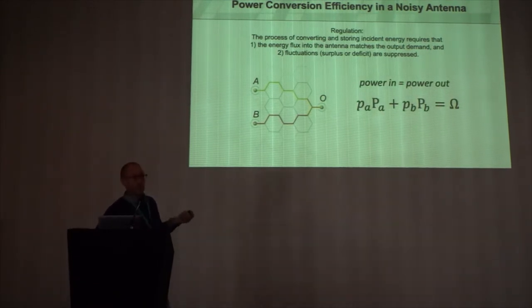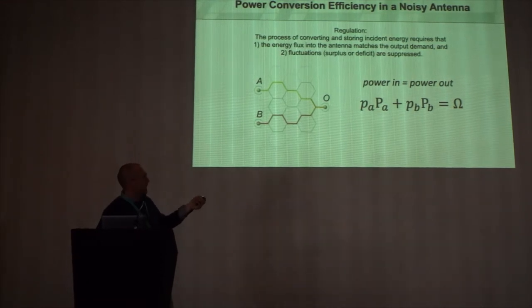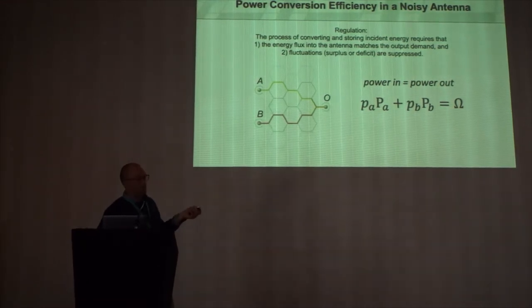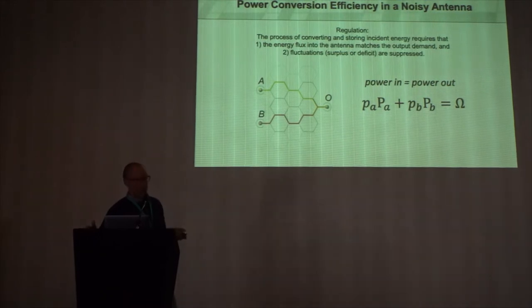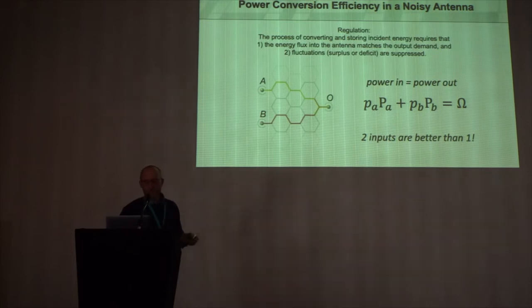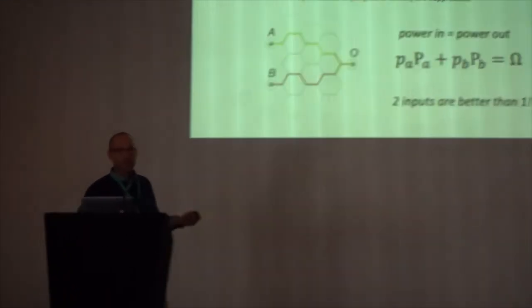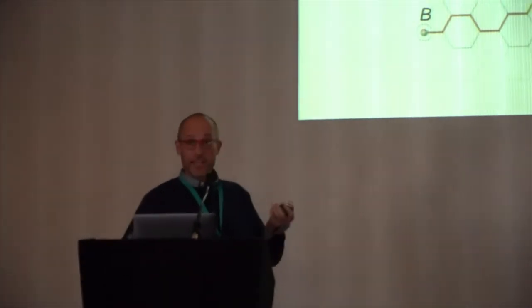This is a problem that undergraduates can solve. And I've actually done this in my statistical mechanics class. All I have is a probability of pulling energy in from A and B, and I want them to fix to this steady output. Now I'm not going to go through the details, but you could show in this model that two inputs are intrinsically better than one at regulating. What this thing does is it takes in different rates of energy and power to basically regulate this photo cell.